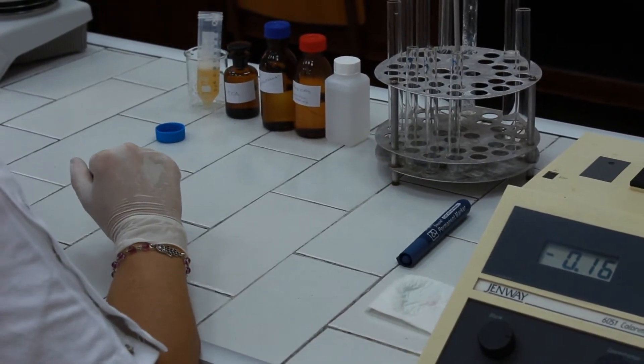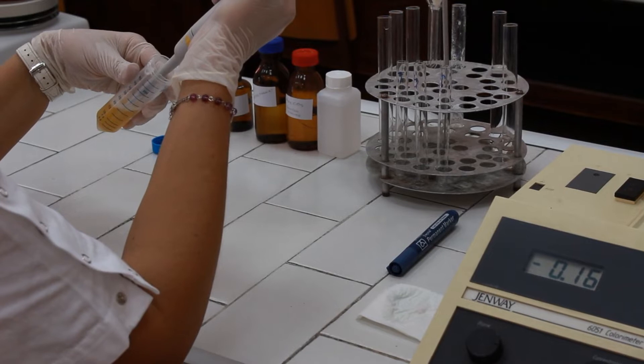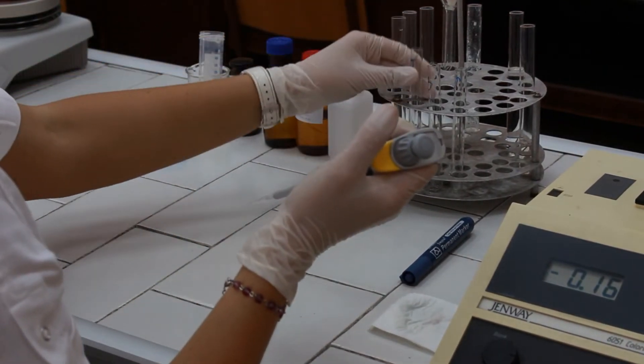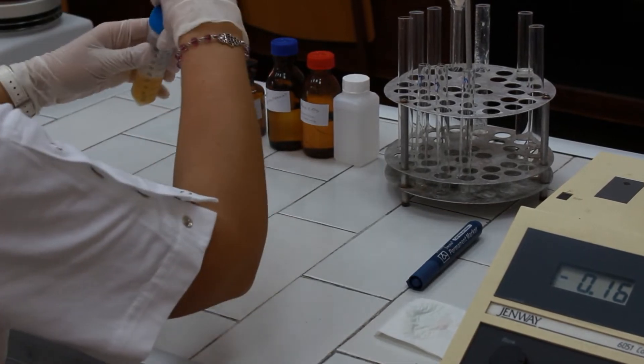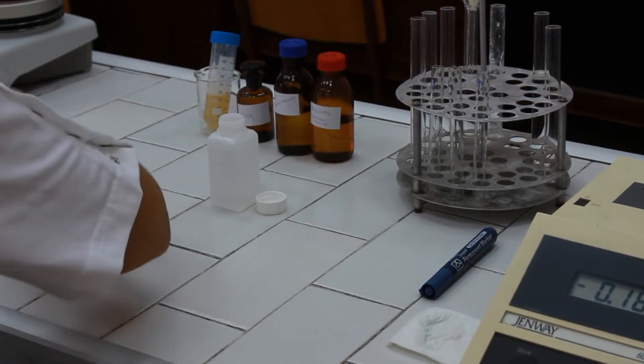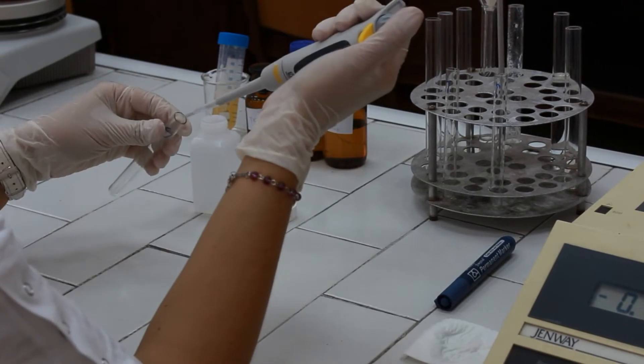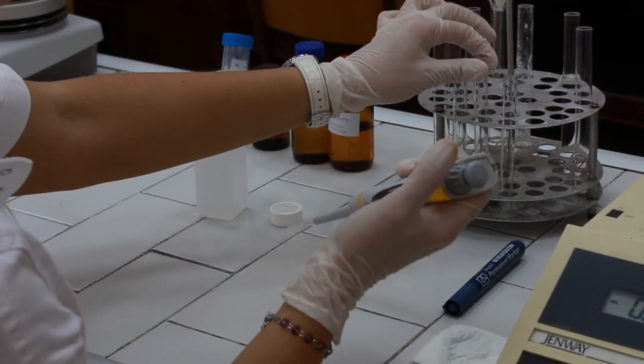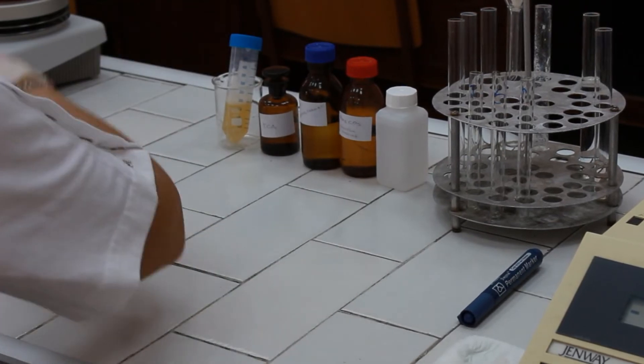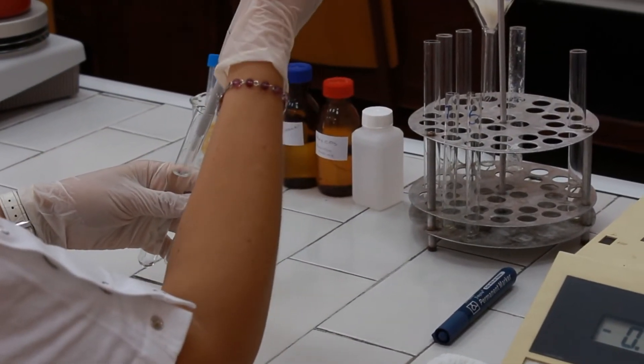We need to pipette 50 microliters of blood plasma to T test tube. Now we need to pipette standard solution of uric acid, 50 microliters, to standard, and water 50 microliters to blank.